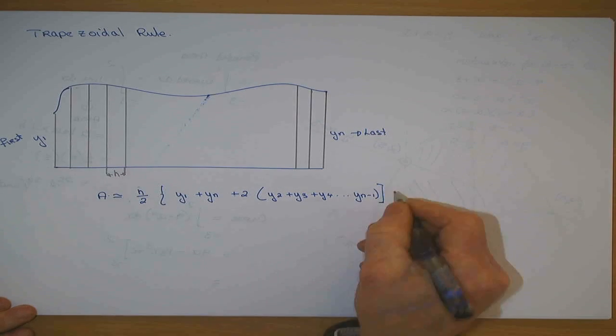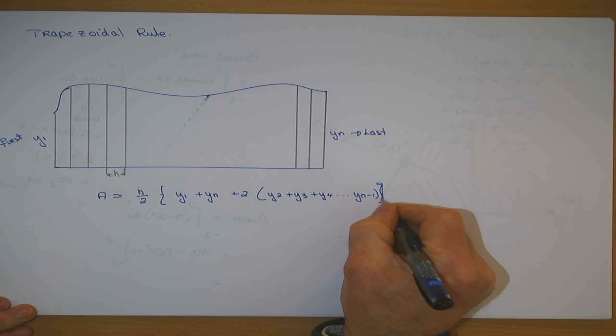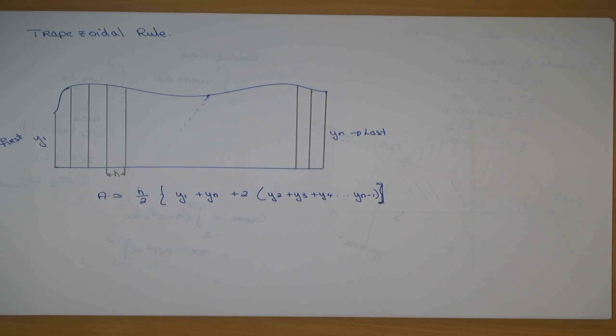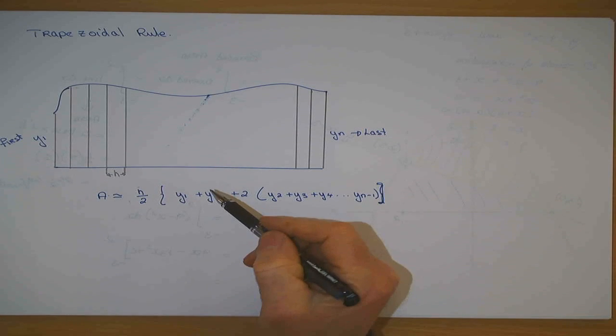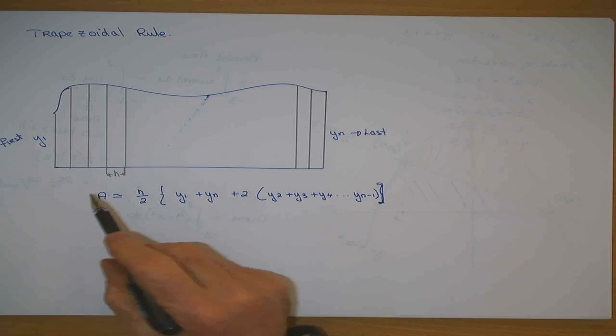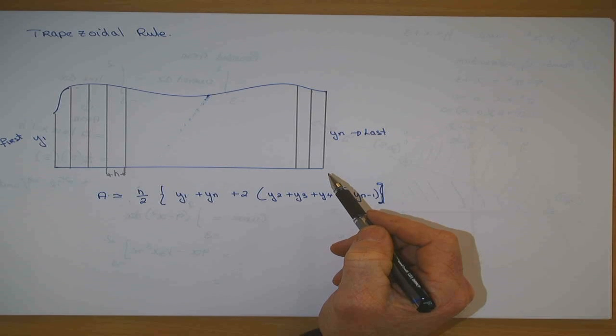And that formula will give you the area of that shape, and that is known as the trapezoidal rule. So what is the trapezoidal rule used to do? To approximate the area under the curve.